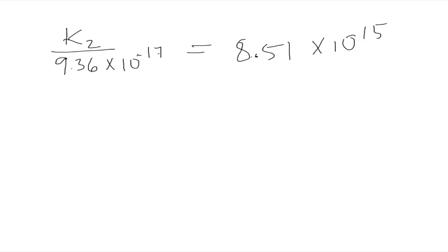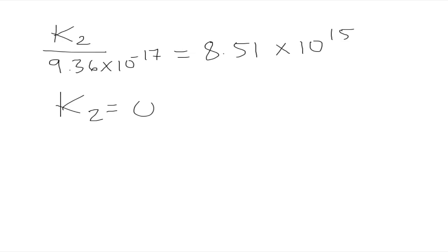Let me write that a little better. There we go. Then you just multiply that times 9.36 times 10 to the negative 17, and you'll get that K2 is equal to 0.797. That would be the value of K2.